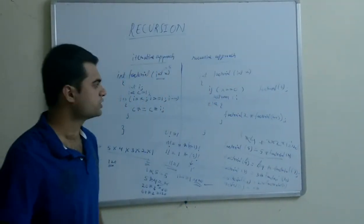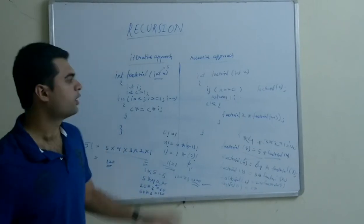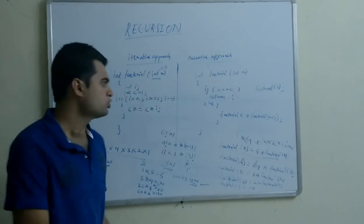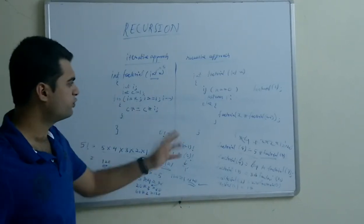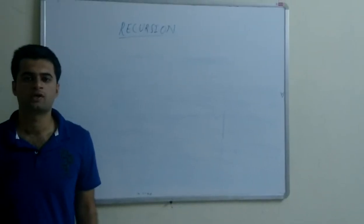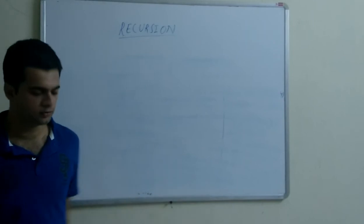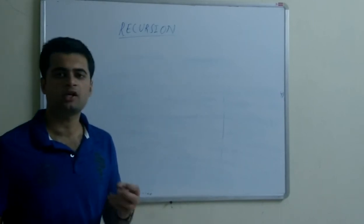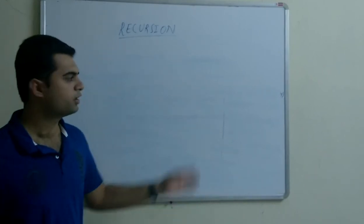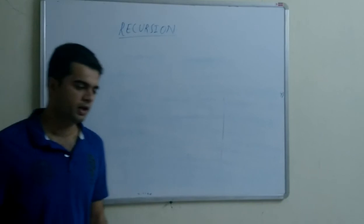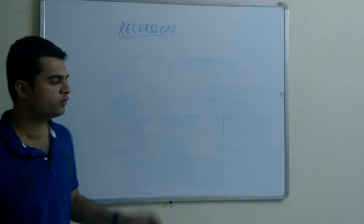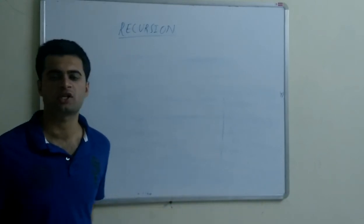So with recursion, by making some more number of function calls, I have calculated the factorial of the number. The most important part in this recursive approach was to give the base condition. If we don't give any base condition to the function, then the function will go into an infinite loop and shall never come out until the user quits. So it is very important to give a base condition in recursion.